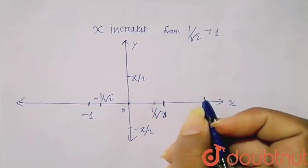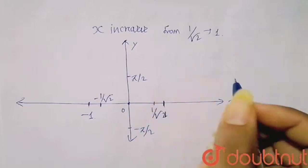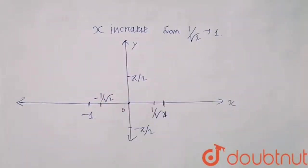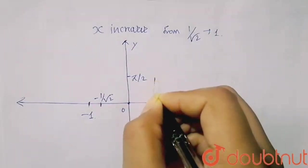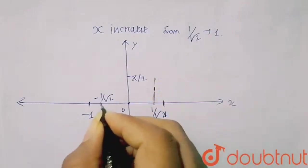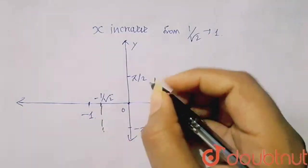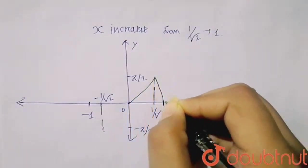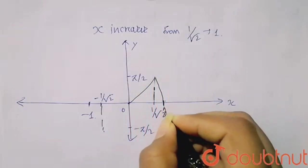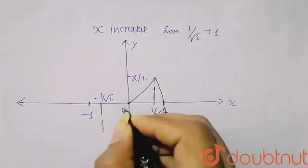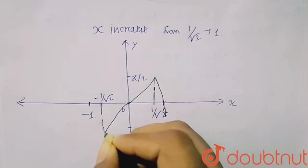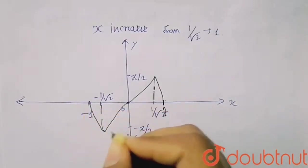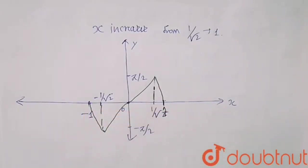This graph increases from 1 by root 2 to 1. So this graph will be formed like this. It will be like a straight line. Draw the straight line from this 1 by root 2 and it goes like this, touching like this on 1. And similarly, here also it goes like this, touching this part minus 1. So this is my required graph for this function. Thank you.